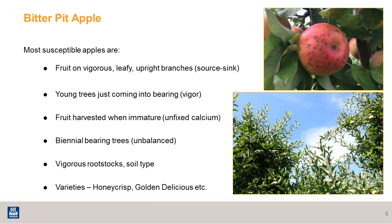There are some attributes that make apples more susceptible to bitter pit. One is fruit growing on vigorous, leafy, upright branches, where competition for calcium occurs between the fruit and the leaves, especially when it's hot. Also, young trees that just come into production that are still vigorous, and fruit that is harvested when still immature, where the calcium in the fruit hasn't become fixed or part of the structure.